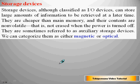Storage devices, although classified as I/O devices, can store large amounts of information to be retrieved at a later time. They are cheaper than main memory and their contents are non-volatile — meaning even when power is turned off, data is not erased. They are sometimes referred to as auxiliary or secondary storage devices, and can be categorized as either magnetic or optical.